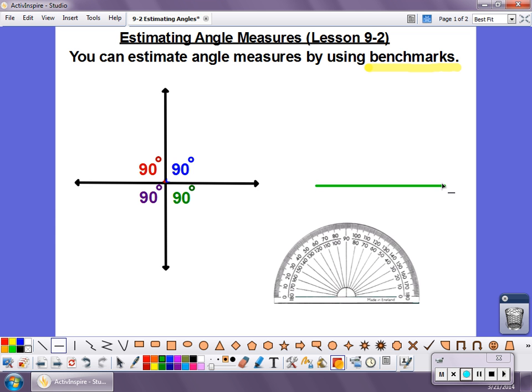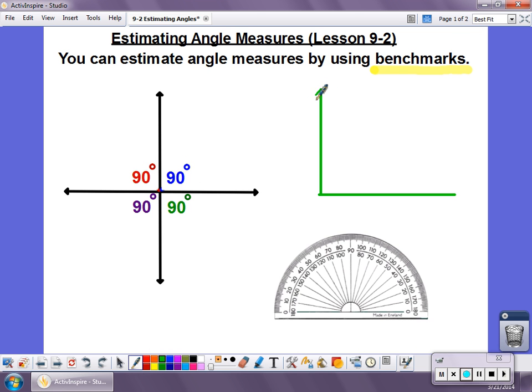So let's imagine I have an angle here that's 90 degrees. We know 90 degree angles look like corners, and what we can do is use this 90 degrees to help us figure out other angles.